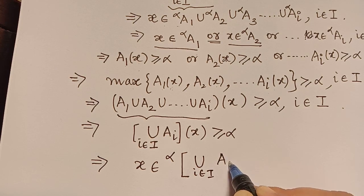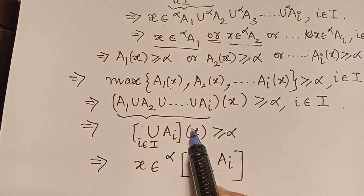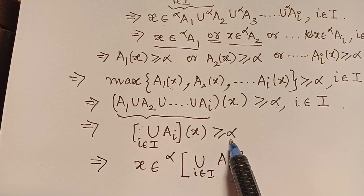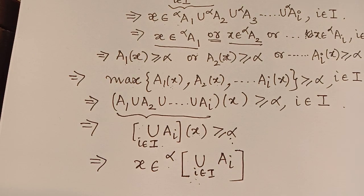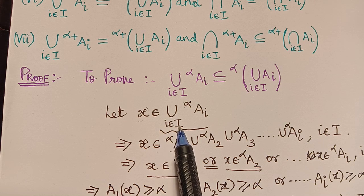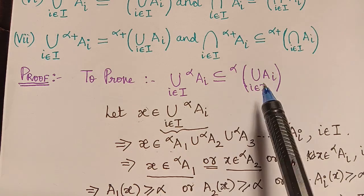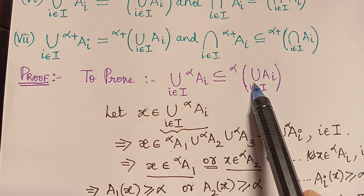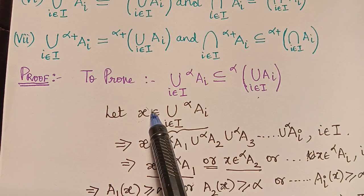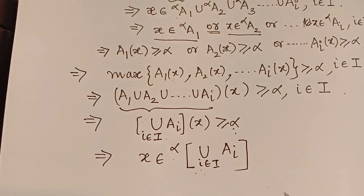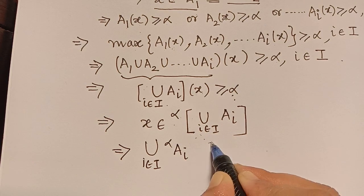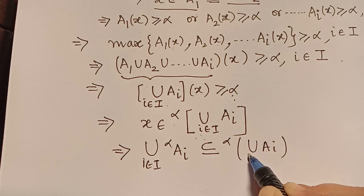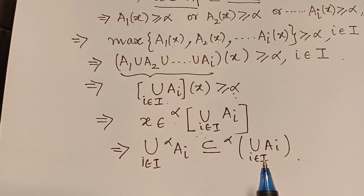By this, we can say that x is an element of the alpha cut of (union of A_i for i in capital I), because the membership grade of x with respect to this fuzzy set is greater than or equal to alpha. We started with x in (union over i in capital I of alpha cut of A_i) and proved x is in the alpha cut of (union A_i for i in capital I), so the subset relation is proved.